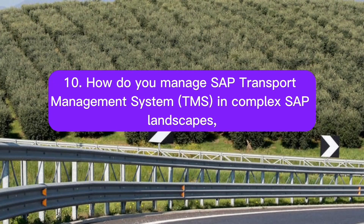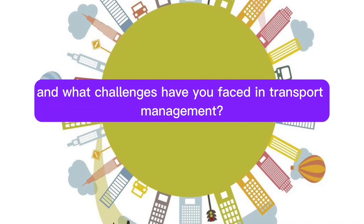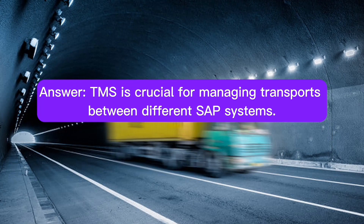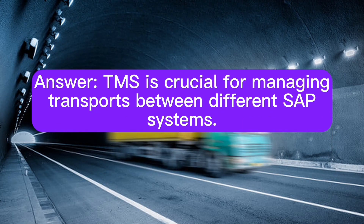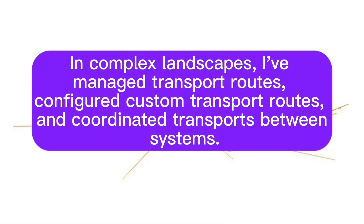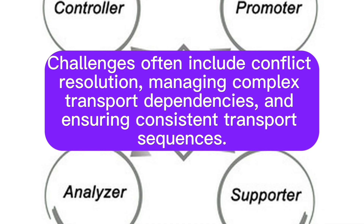Question 10: How do you manage SAP Transport Management System (TMS) in complex SAP landscapes, and what challenges have you faced in transport management? Answer: TMS is crucial for managing transports between different SAP systems. In complex landscapes, I've managed transport routes, configured custom transport routes, and coordinated transports between systems. Challenges often include conflict resolution, managing complex transport dependencies, and ensuring consistent transport sequences.